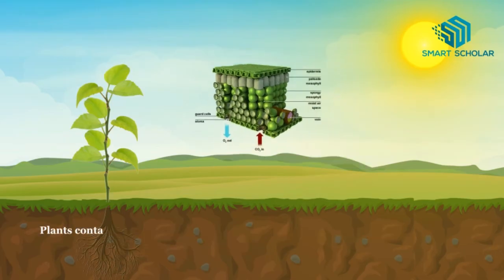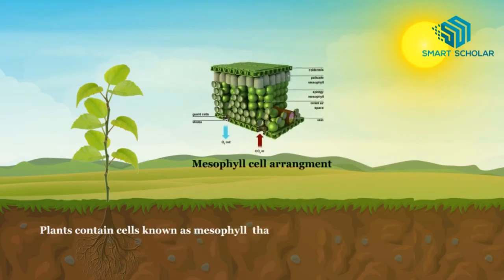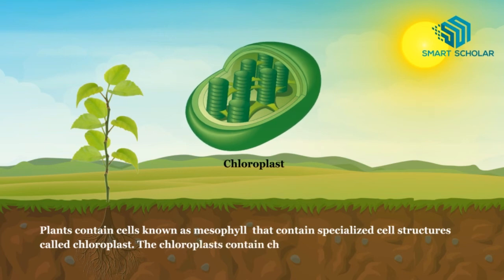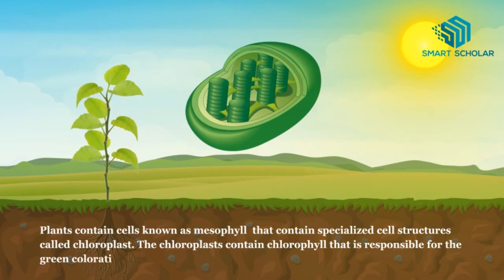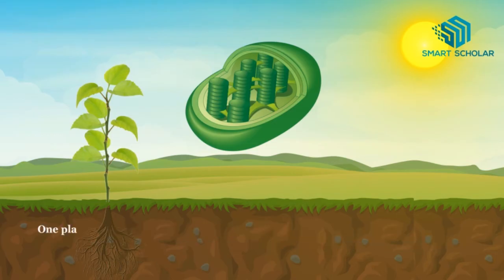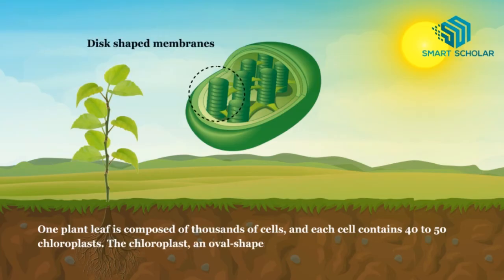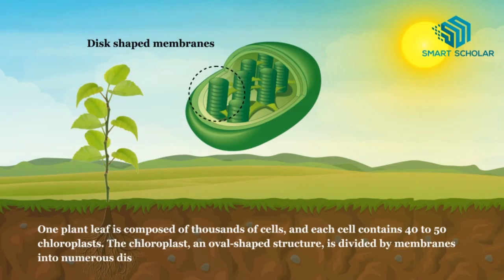Plants contain cells known as mesophyll that contain specialized cell structures called chloroplasts. The chloroplast contains chlorophyll that is responsible for the green coloration of plants. One plant leaf is composed of thousands of cells and each cell contains 40 to 50 chloroplasts. The chloroplast, an oval-shaped structure, is divided by membranes into numerous disc-shaped compartments.